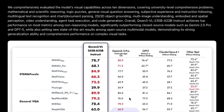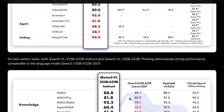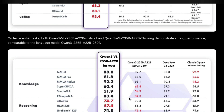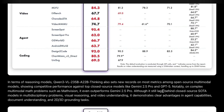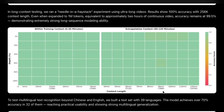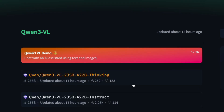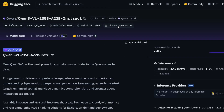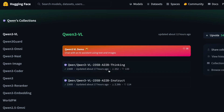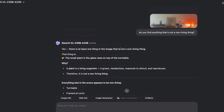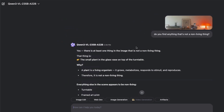Overall, the model is much better than all other proprietary models on a lot of different benchmarks. There are a couple of benchmarks where Claude Opus 4 or Gemini 2.5 Pro are better, but overall for an open source model this is impressive. The model is already available on Hugging Face under an Apache 2.0 license — both the instruct model and the thinking model. But I'm going to use the model within Qwen's ecosystem at chat.qwen.ai, where you can select the Qwen3VL 235A22 billion parameter model.